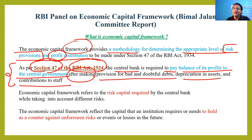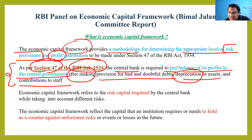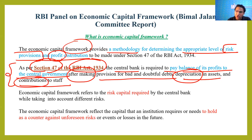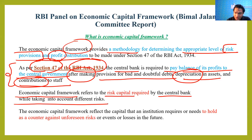Provision for doubtful and bad debts means RBI has invested in some security whose value can come down, so some profit must be kept to set off those losses. Depreciation in assets means the decrease in value of an asset over time — for example, a building decreases in value after 10-20 years, so RBI keeps profit to rebuild it in the future. The Economic Capital Framework refers to the risk capital required by the central bank while taking into account different risks.